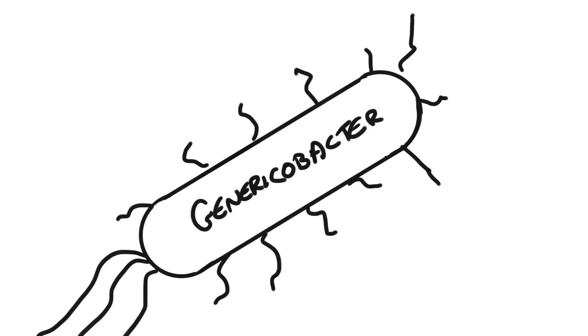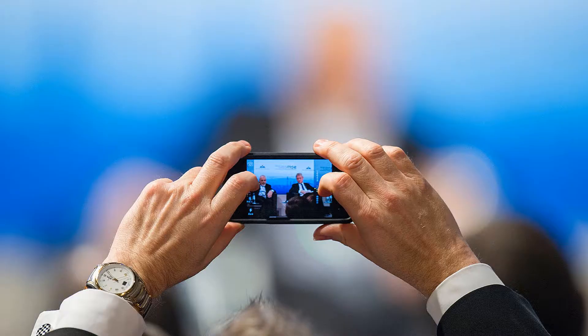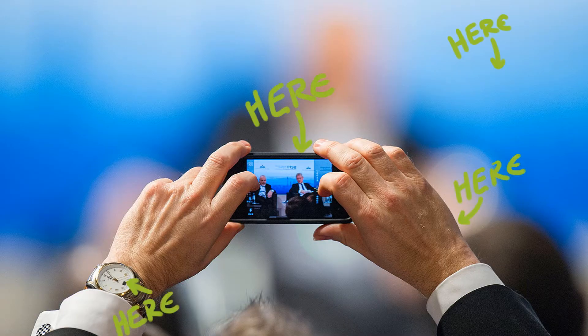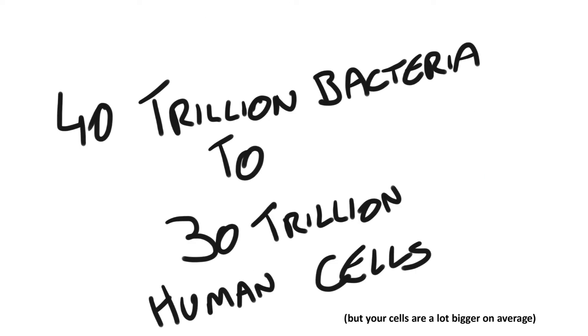Bacteria are tiny single-celled organisms and they're everywhere. They're on your phone, they're on your skin, they're bouncing around in the air, they're in your gut. You may actually have more bacterial cells in your body than human cells.